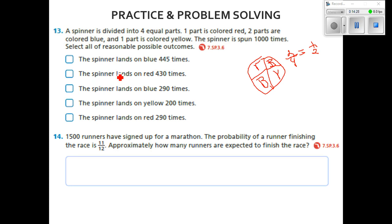The spinner lands on red 430 times. Well, there's only one red, so that's going to be 1,000 divided by 4, and that's going to be about 250. So theoretically, it's going to land on blue 500 times, it's going to land on red 250 times, and that means it's going to land on yellow 250 times as well.